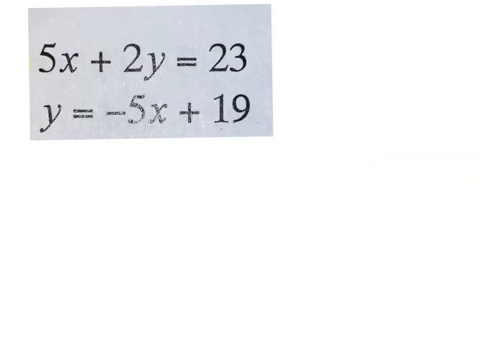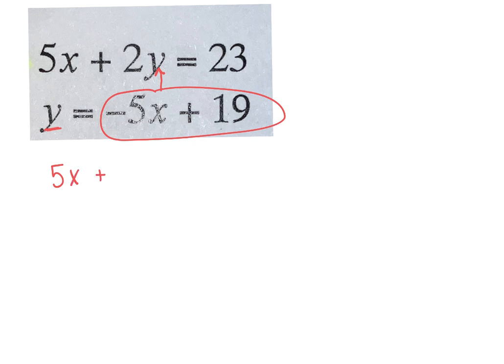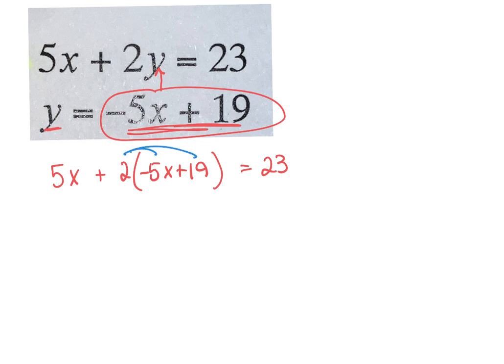When you have a variable that's already isolated, you can just take what it equals and plug it into the other equation for the variable that is by itself. So I'm going to rewrite the top equation. I'm going to say 5x plus 2, and instead of y, I'm going to write what y equals: negative 5x plus 19, equals 23. Now I have one variable that I can solve for. So I'm going to distribute that 2.